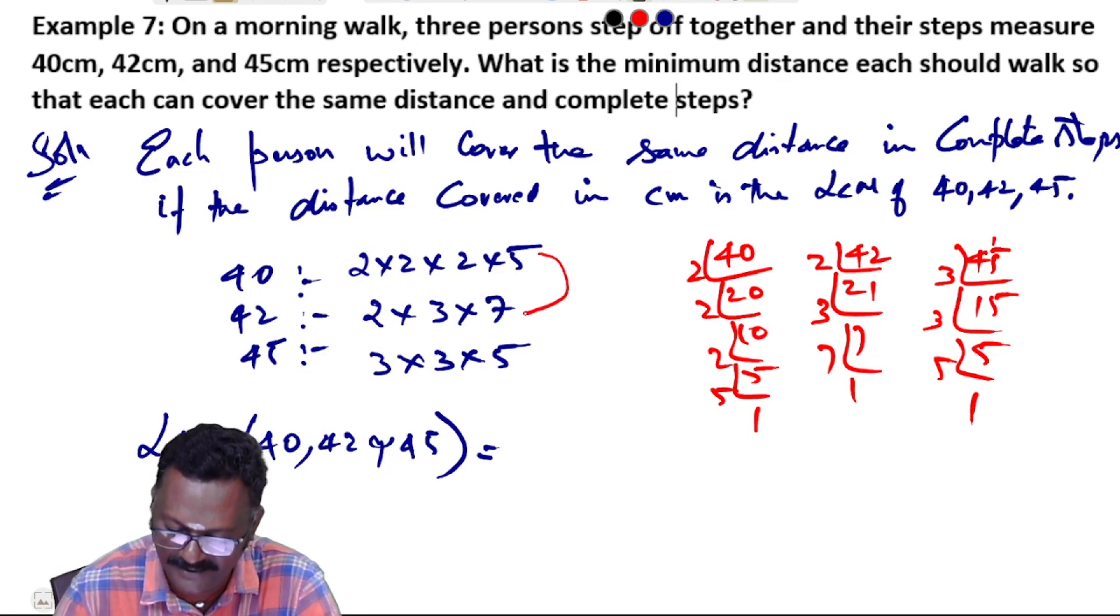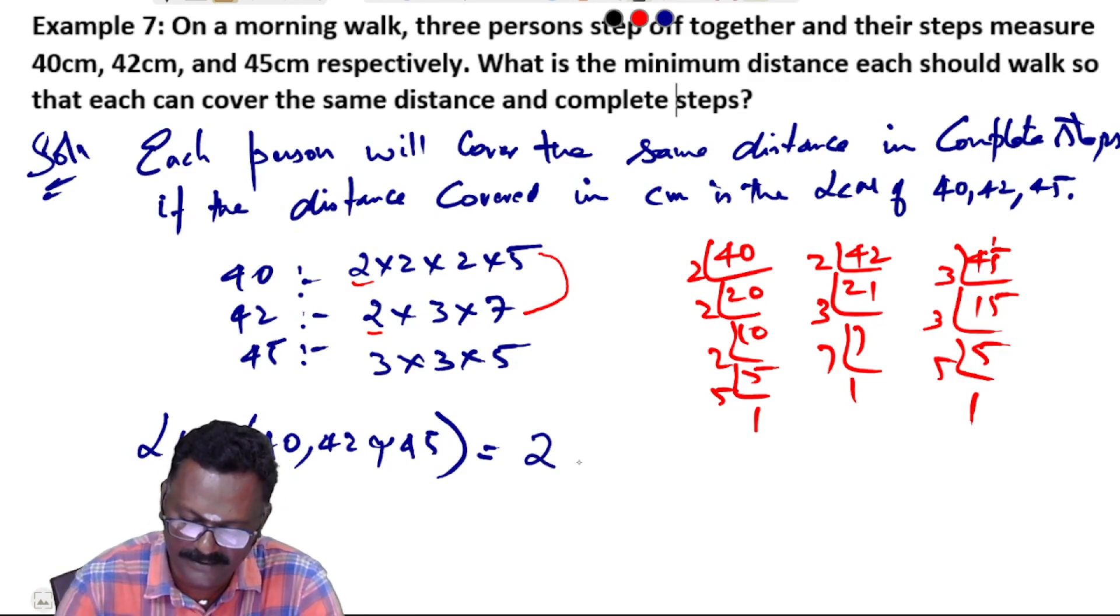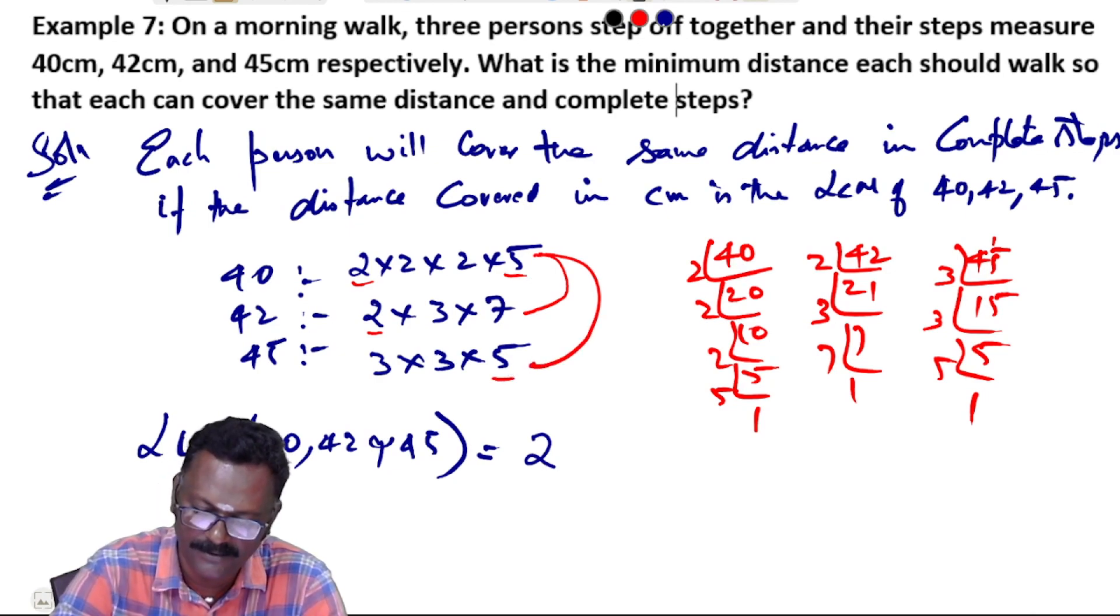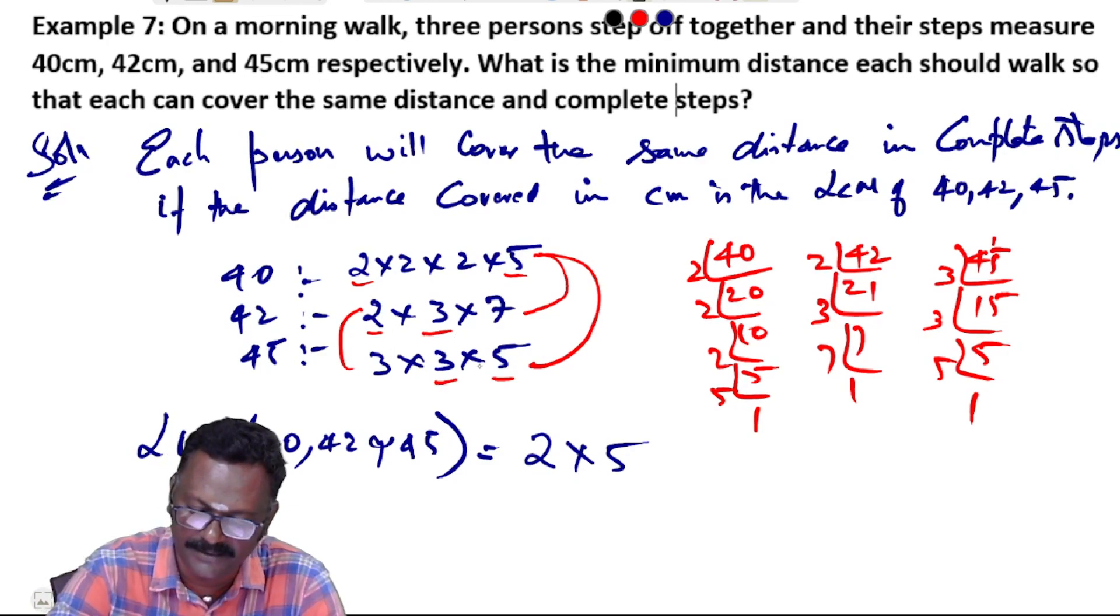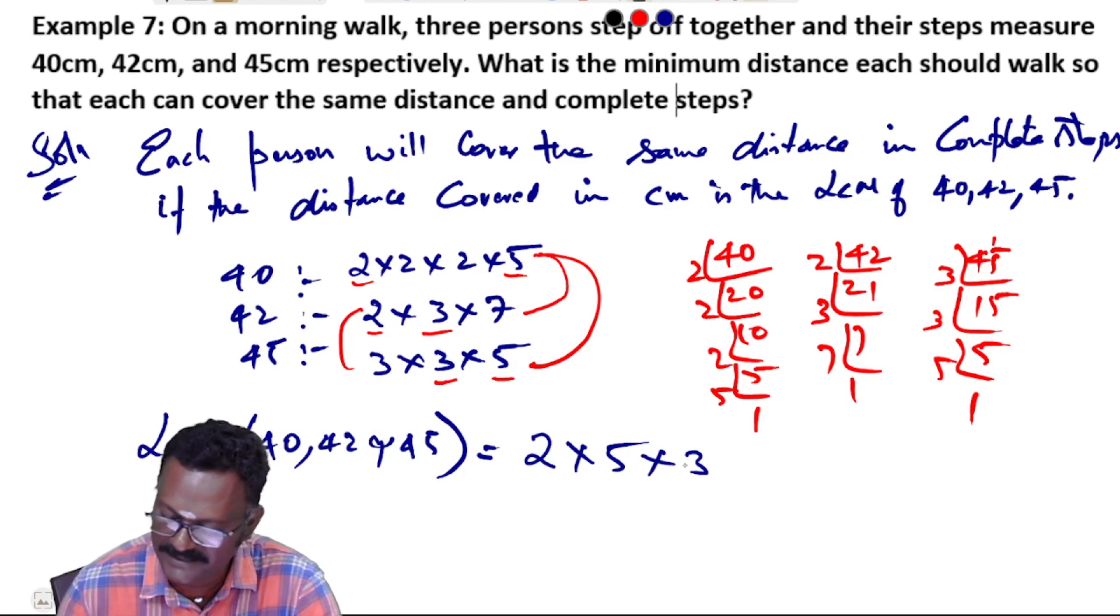For the LCM, we take the common factors and the remaining factors. The common factor is 2. Balance factors: two more 2s, one 7, one 3, one 3, one 5, one 5.